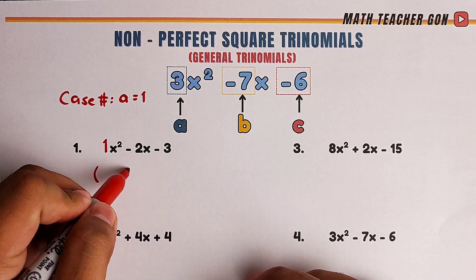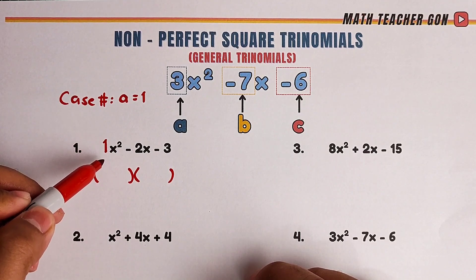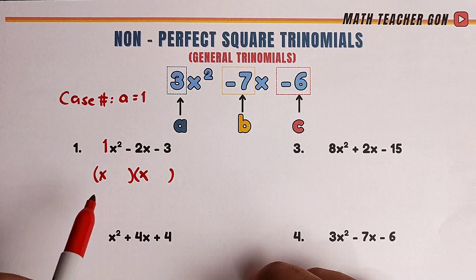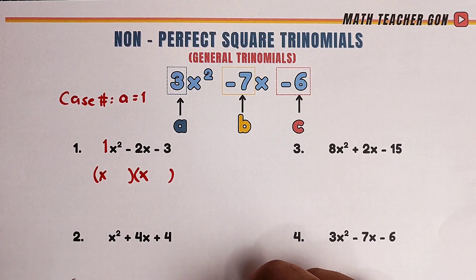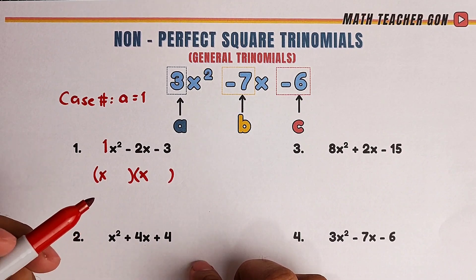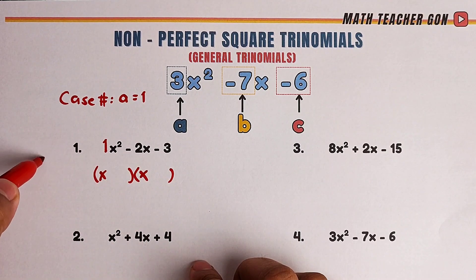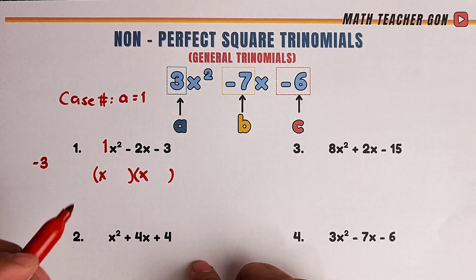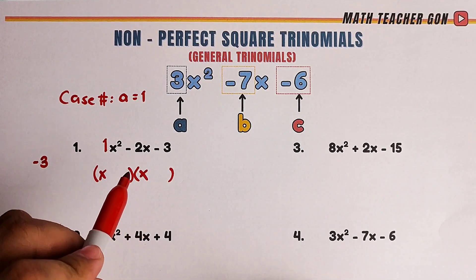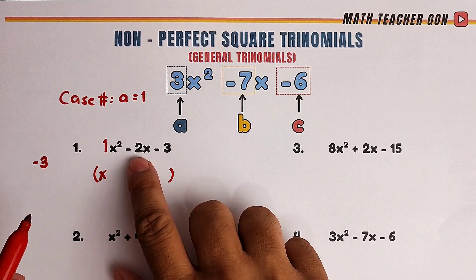Let's have two sets of parentheses. We will factor the first term, which is x squared — the factors are x and x, since x times x is x squared. Our only problem now is the second terms of our factors. We need to figure out what are the factors of c, which is negative 3, that will add up to negative 2 — the value of b.